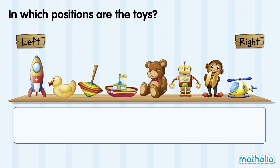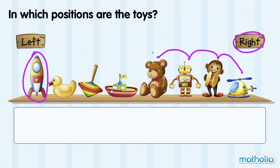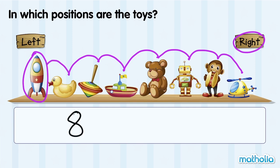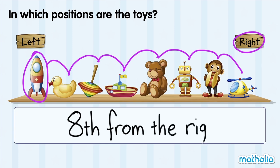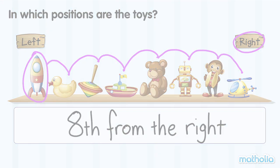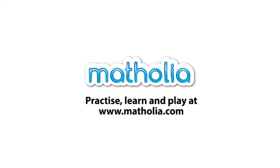From the right, in which position is the rocket? The rocket is here. From the right, the rocket is first, second, third, fourth, fifth, sixth, seventh, eighth. The rocket is eighth from the right.